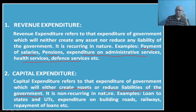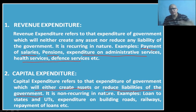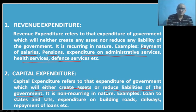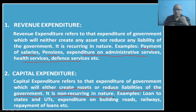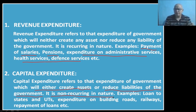Capital expenditure is a one-off type of expenditure by the government. The government obviously needs to make revenue expenditure time and again, but it tries to avoid capital expenditures as much as possible. What distinguishes capital expenditure from revenue expenditure is that it is non-recurring in nature — it is irregular. Revenue expenditure, on the other hand, is regular in nature. Every month the government has to bear those expenses, while capital expenditure may occur once a year, once in two years, or once in five years.